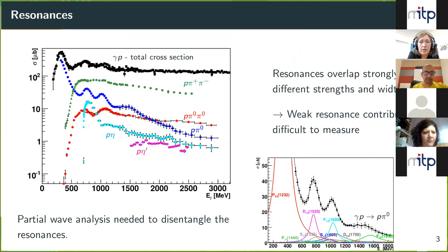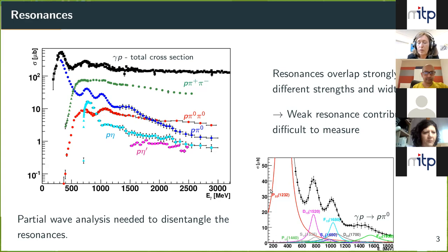You can look into different cross sections — here is photoproduction total cross section in black and different final states in colored dots. At lower masses you see structures; for example, for the eta final state the S11 dominates. But at higher masses all cross sections become rather flat. What's interesting is which resonance states contribute — here is a picture of the Breit-Wigner distributions of contributing resonance states.